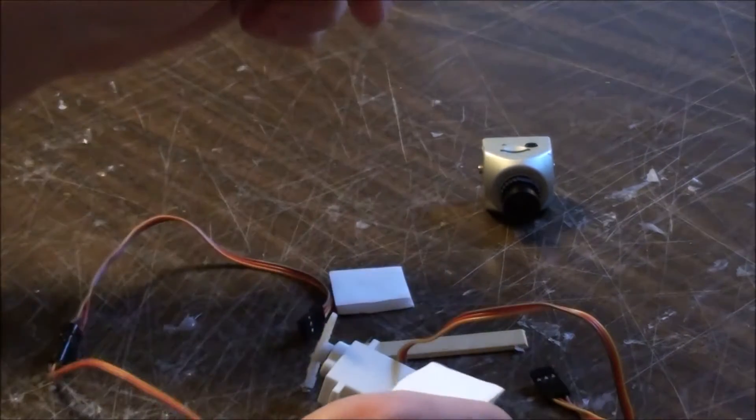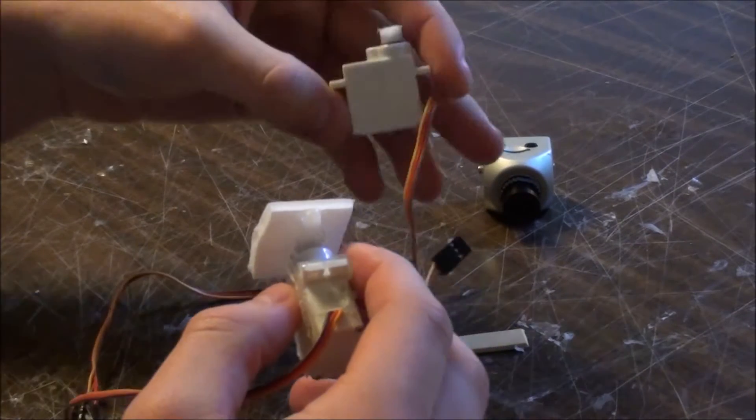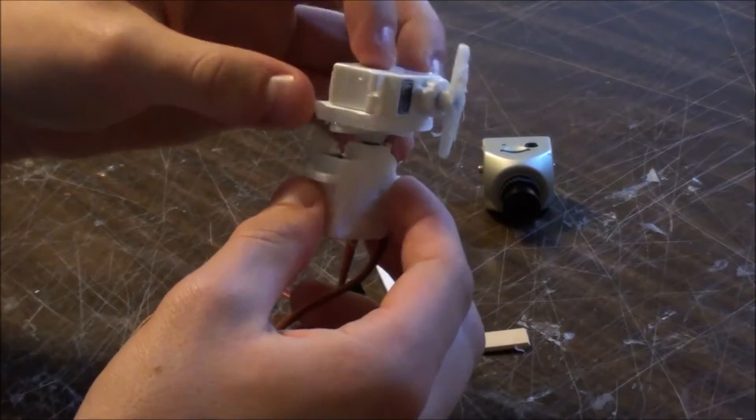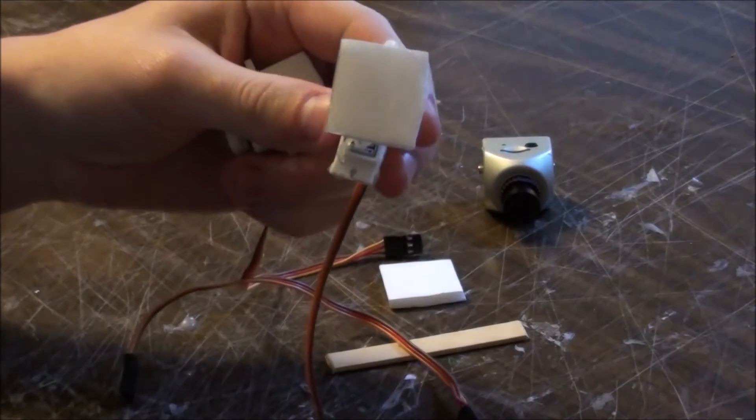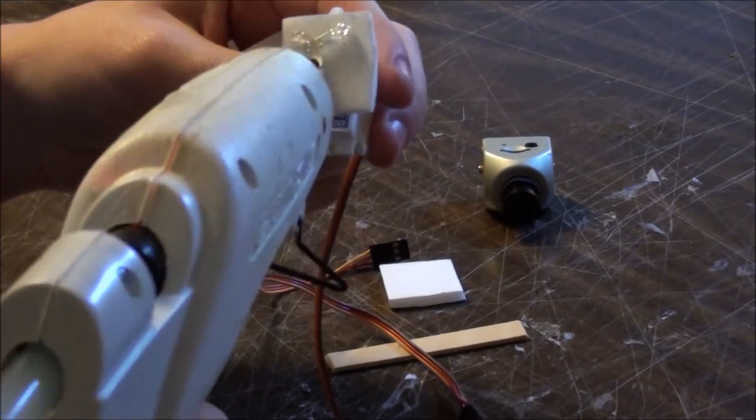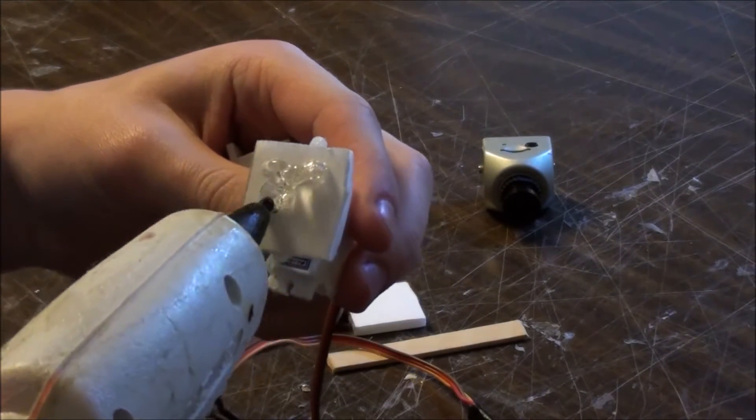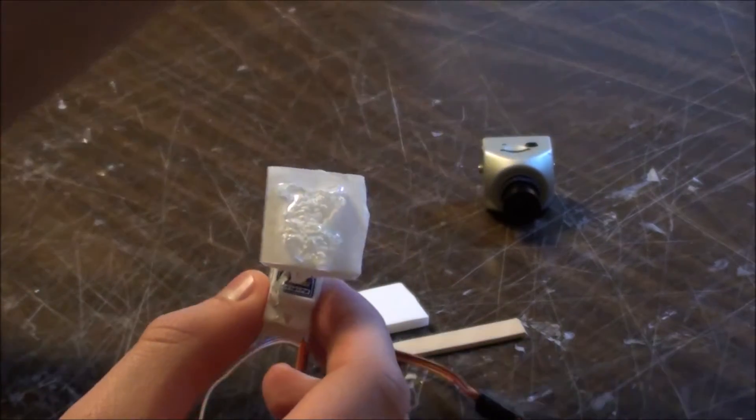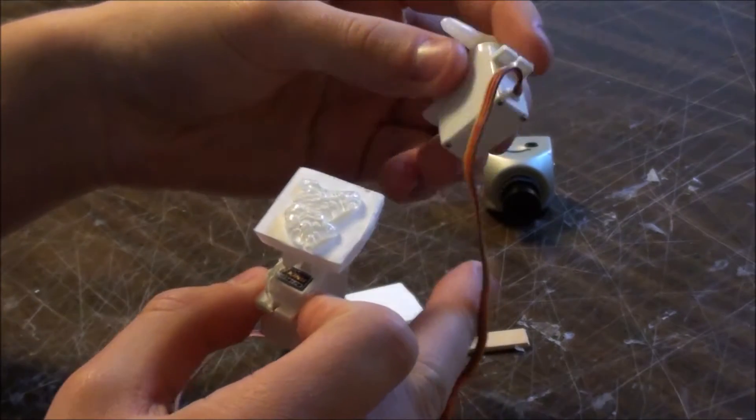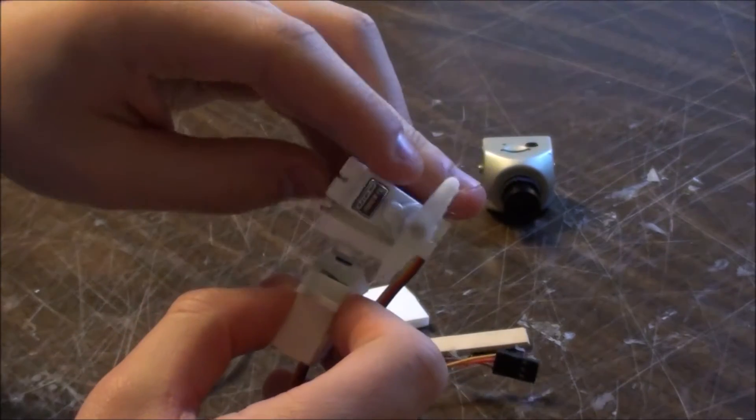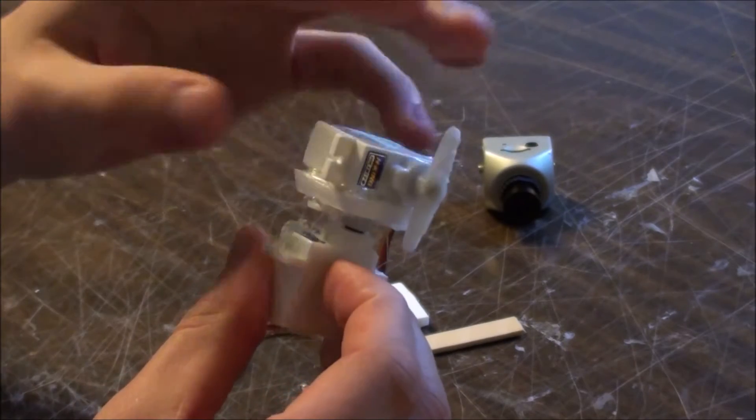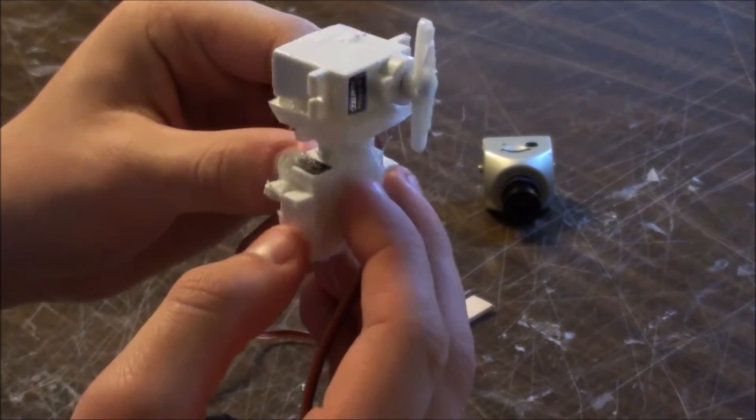So, now that that is almost dry, we're going to go ahead and stick the second one on. And basically, all you have to do is just put some more glue on top of this and stick the next servo on, like this on the side. So now it looks like this.